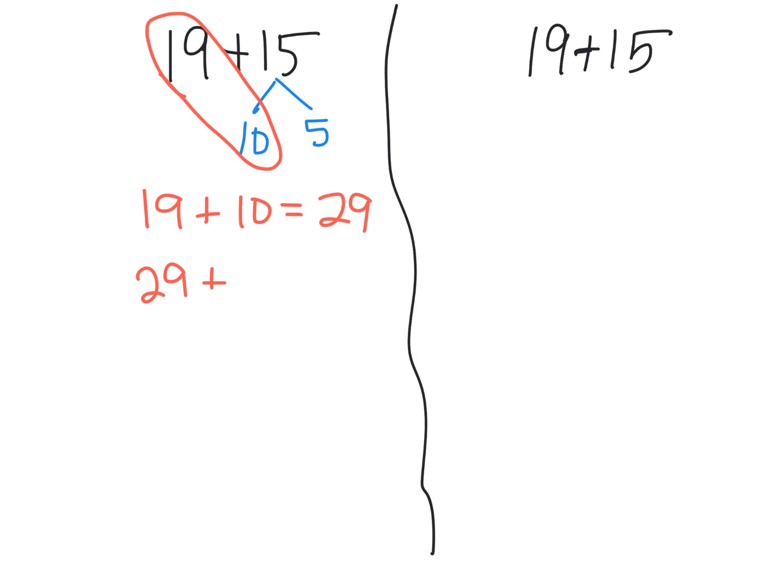Now we're going to take that 29 and add the remaining 5. Now how am I going to do that? Well I could just take 29 and add 5. I could hold up 5 fingers and say 29 and then go 30, 31, 32, 33, 34, and I could get my answer of 34. That's one way, by counting on the additional 5.